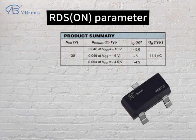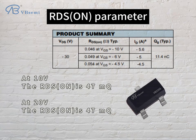RDS on parameter: at 10V, the RDS on is 47mΩ; at 20V, the RDS on is 47mΩ.